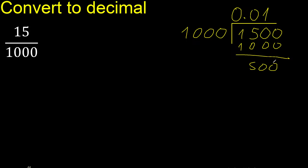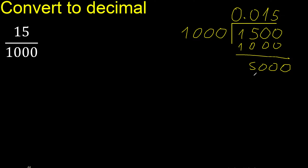Subtract — there is no number that goes down, therefore complete — always complete with 0. Point is here. 1000 multiplied by which number is nearest? Multiplied by 5 is exactly 5000. Subtract — 0 remainder — therefore finish.